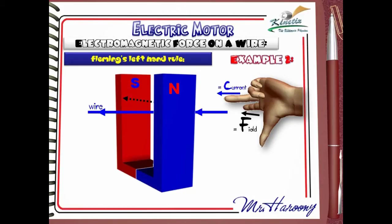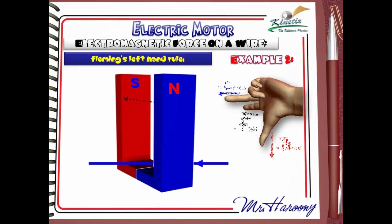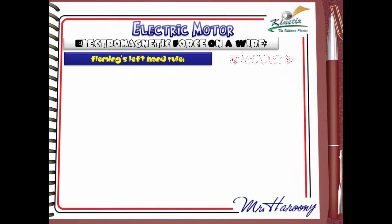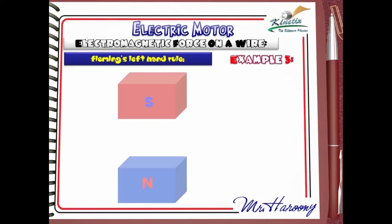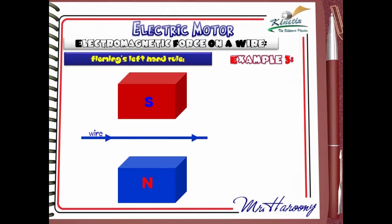The current is given by the second finger and it flows from right to left. According to these directions, Fleming's Left Hand Rule shows that the wire will be pushed downwards, as shown by the thumb.